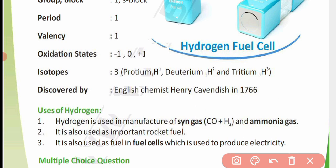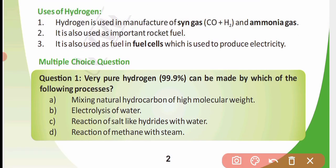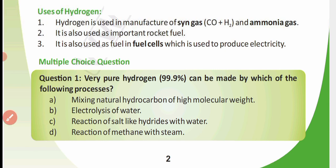Multiple choice question — give the answer in the comment section. Very pure hydrogen, 99.9%, can be made by which of the following processes? I have 4 options — which option is correct? Give the answer in the comment section. Thanks for watching this video.